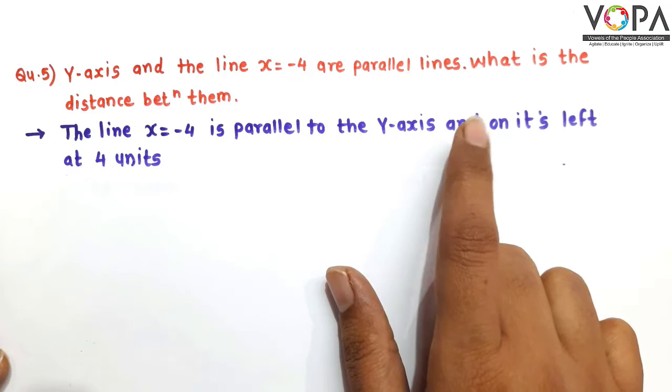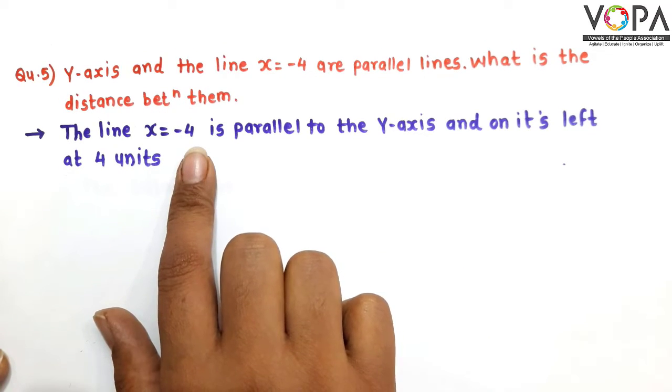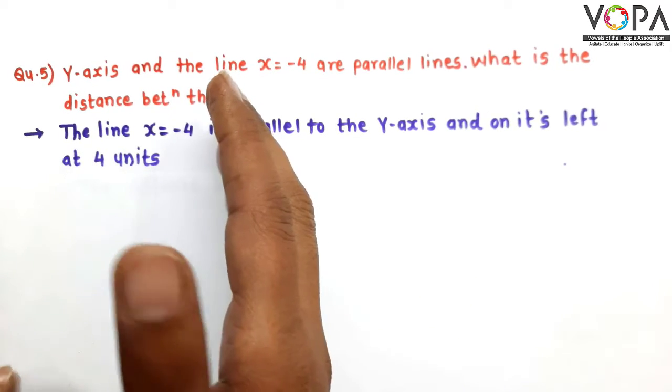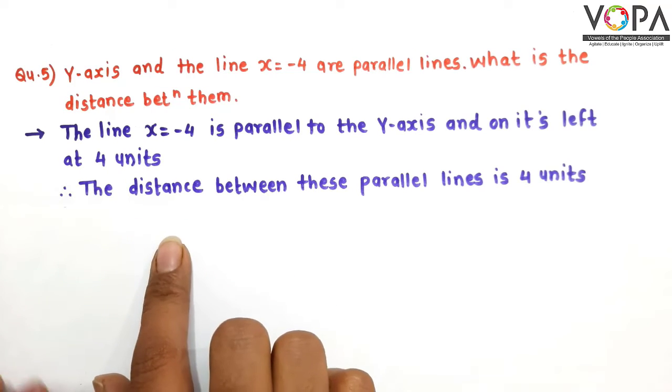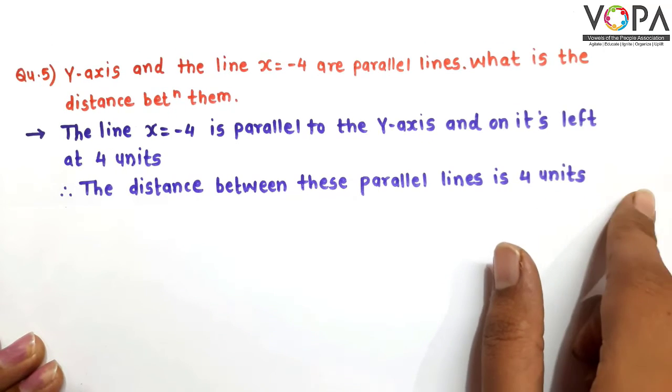Therefore, the line x equals -4 is on the left side of y-axis at a distance 4 units. Therefore, the distance between these parallel lines is 4 units.